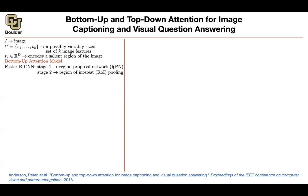Faster R-CNN has two components. First, a region proposal network that proposes what regions to work with. Then, those regions are pooled into a vector, because the regions can have different sizes — you take the average of those vectors. So it's a two-stage process that gives us bounding boxes. For a bounding box with a certain height and width — say 24 pixels by 12 pixels — you take those pixels, which are d-dimensional, compute the average, and get one vector per box. Multiple boxes per image gives you your set of vectors.